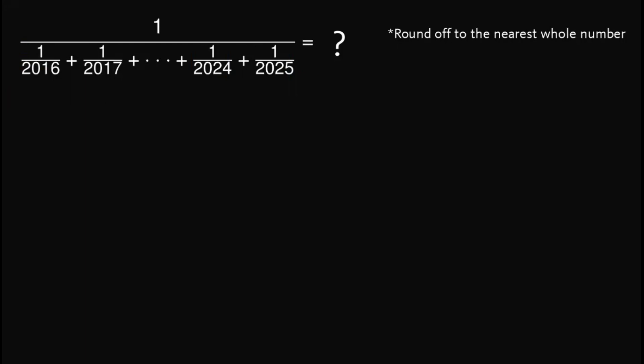So first, note that if n for some integer n is greater than 2016, then 1 over n is less than 1 over 2016. How did we arrive at that? Note that we can divide n and 2016 both sides. Then we can cancel the n and 2016, giving us 1 over n is less than 1 over 2016.